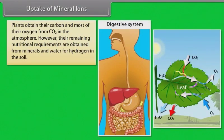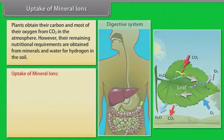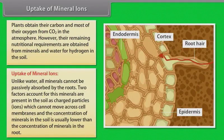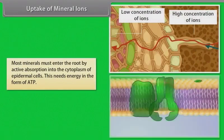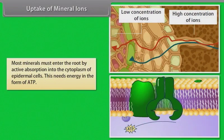As we all know, plants do not have teeth and digestive organs like us. They obtain their carbon and most of their oxygen from CO2 in the atmosphere. However, their remaining nutritional requirements are obtained from minerals and water for hydrogen in the soil. Unlike water, all minerals cannot be passively absorbed by the roots. Two factors account for this: minerals are present in the soil as charged particles or ions, which cannot move across cell membranes, and the concentration of minerals in the soil is usually lower than in the root. Therefore, most minerals must enter the root by active absorption into the cytoplasm of epidermal cells. This needs energy in the form of ATP.